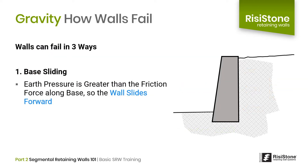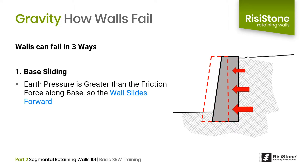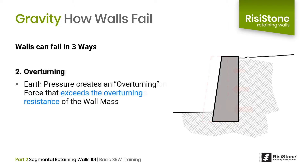The first failure mode is called base sliding. In this case, the earth pressure is greater than the friction force generated along the base, so the wall slides forward. We can improve our base sliding resistance by increasing the weight of the wall and by having a rough surface along the base, which creates a higher frictional force.